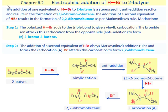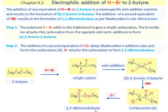In this section, we will be dealing with a variety of electrophilic addition reactions to alkynes, beginning with the electrophilic addition of HBr to 2-butyne. The addition of one equivalent of HBr to 2-butyne is a stereospecific anti-addition reaction and results in the formation of Z-2-bromobutene. The addition of a second equivalent of HBr results in the formation of 2,2-dibromobutane as per Markovnikov's rule.